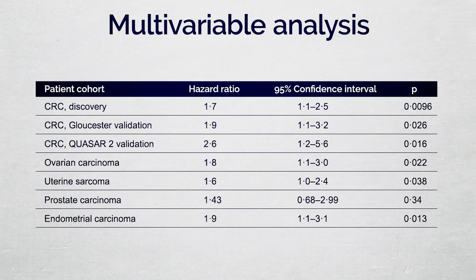In all cohorts except the prostate cancer cohort, chromatin heterogeneity was significant in multivariable analysis with established prognostic markers.